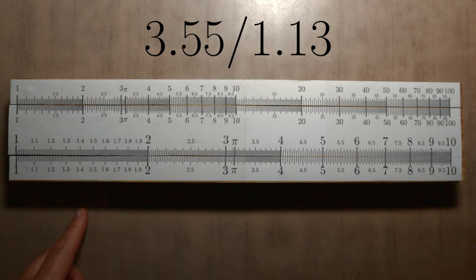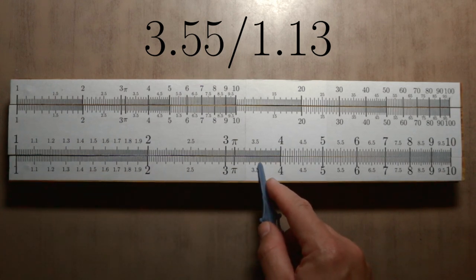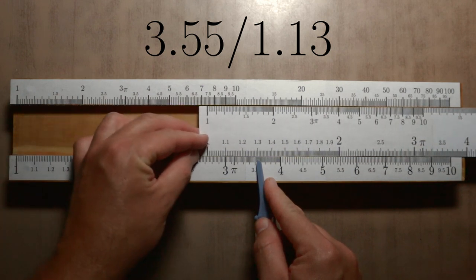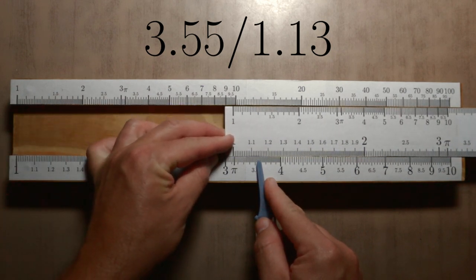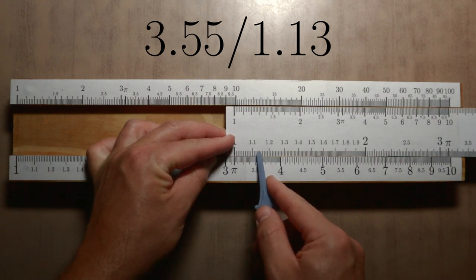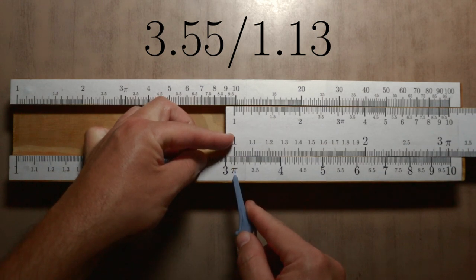Now we can do this operation. We look for 3.55 at the bottom and match it to 1.13 on its moving scale. We move around until 1. Immediately below, on the original fixed scale, we have the result,